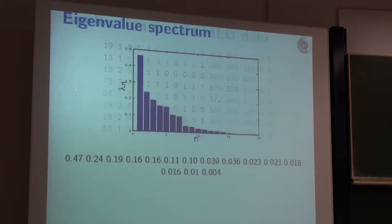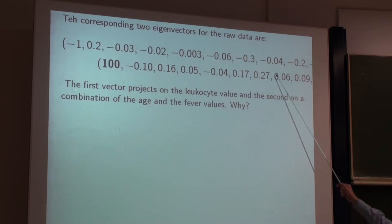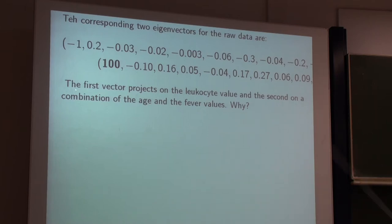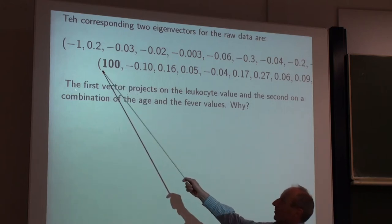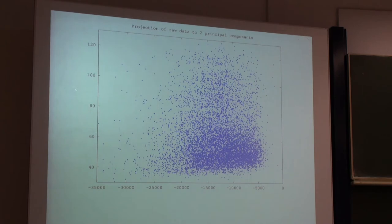And that's actually what happens. The principal component has a value of something like 10,000 compared to extremely small values. So the principal component just projects out the leukocyte value. The second principal component has a value of 100 here — it's a combination of age and the fever values. And that's why we get such a picture without structure.